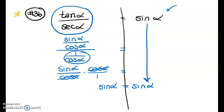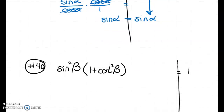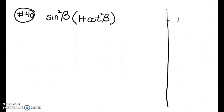I don't need to rewrite sine of alpha all the way down — I'll draw an arrow to show it equals sine of alpha on the right. That completes our first trigonometric proof.